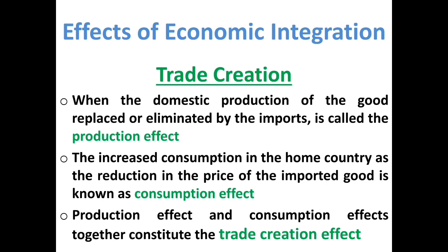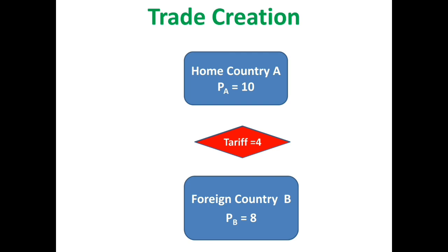Let us analyze trade creation using a hypothetical example. Consider two countries — a home country A and a foreign country B — both producing a commodity X. The price of commodity X in country A is Rs. 10, while the price of commodity X in country B is Rs. 8.